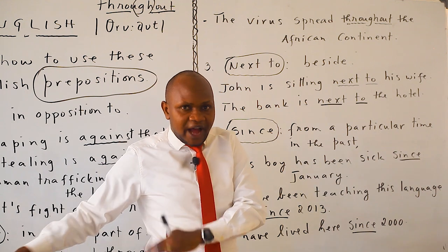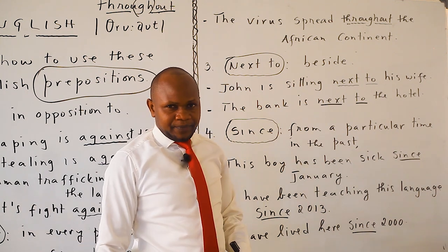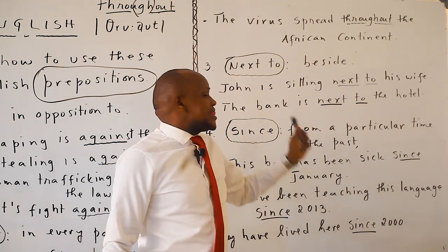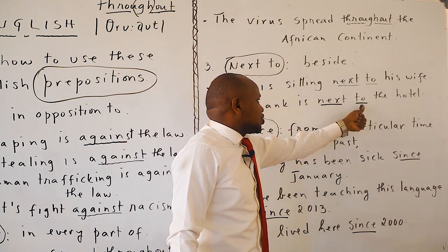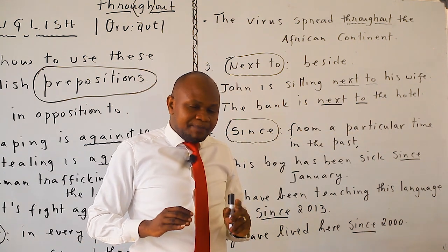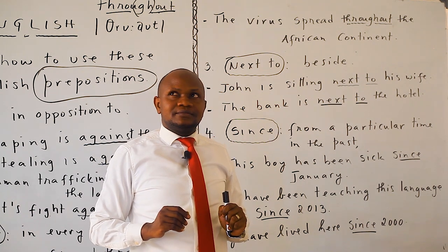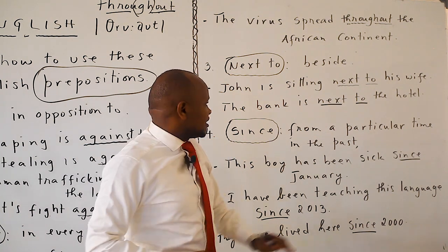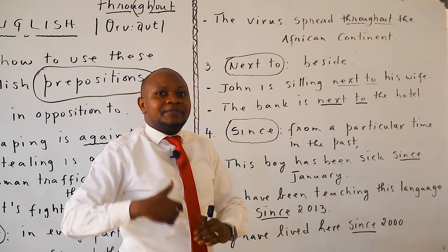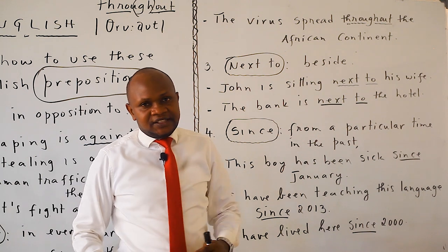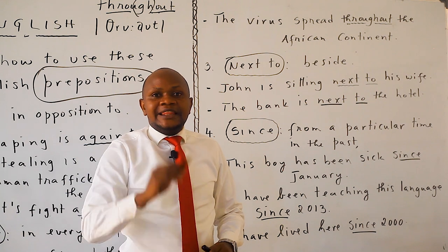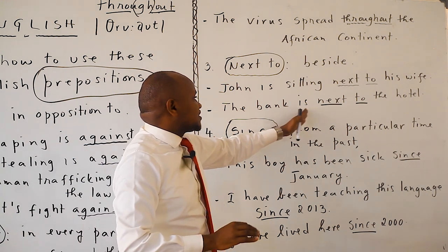John is sitting next to his wife. John is sitting beside his wife — it is the same meaning. Another example: 'The bank is next to the hotel.' The bank is right beside the hotel.